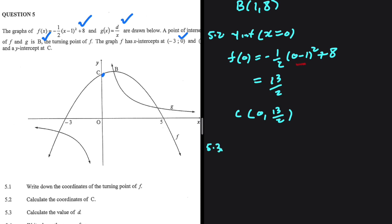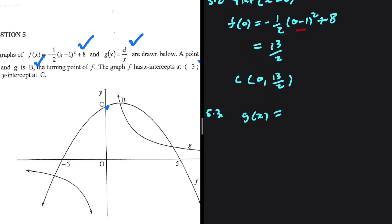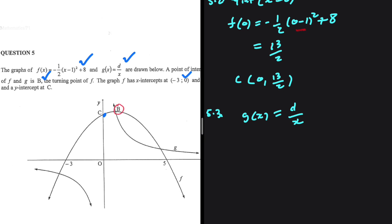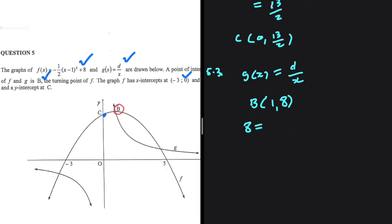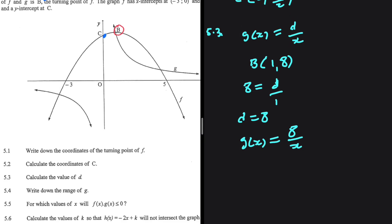In 5.3, we calculate the value of D. D is a variable in G(x), where G(x) equals D divided by x. We are told that G(x) and F(x) touch at B, so B is a point on G(x). We already know the coordinates of B: x equals 1 and y equals 8. Substituting into G(x): 8 equals D divided by 1, so D equals 8. Therefore G(x) equals 8 divided by x.